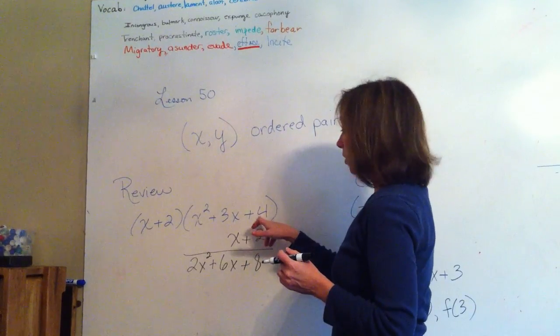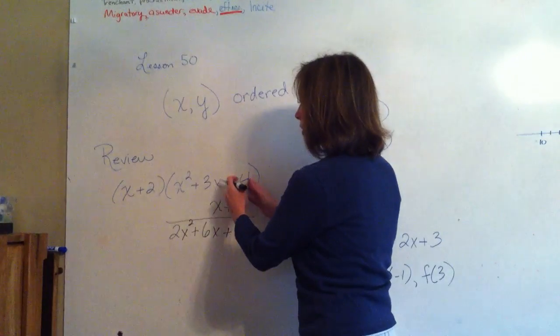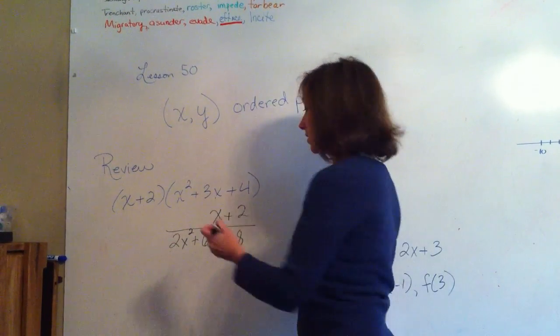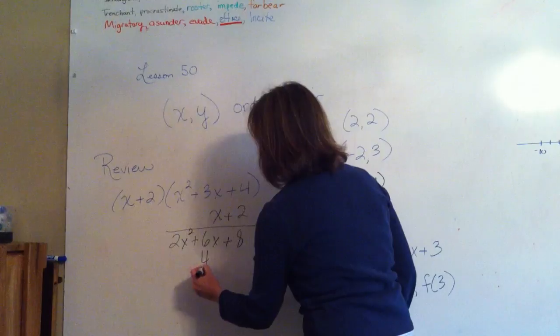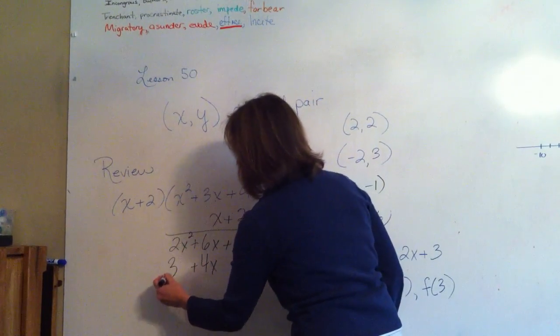So we took the 2 times all three terms in the trinomial. Now we're going to take the x times all three terms in the trinomial and line them up under the ones it matches. So x times 4 is 4x. Put your plus there.